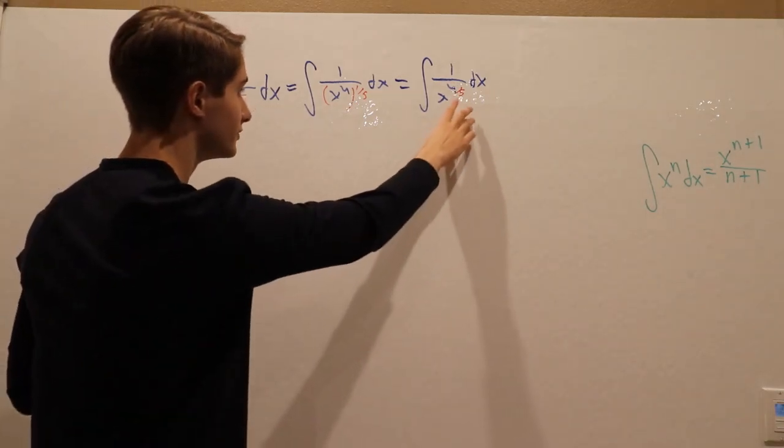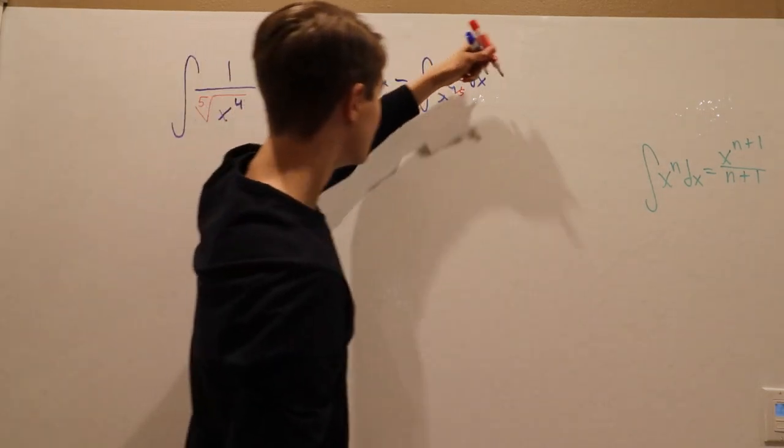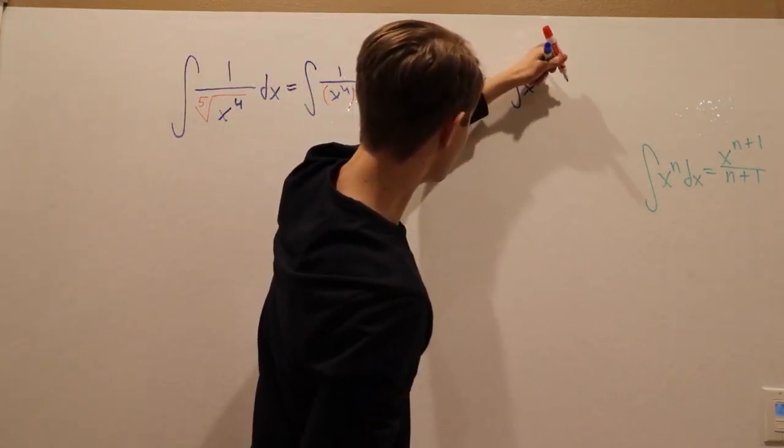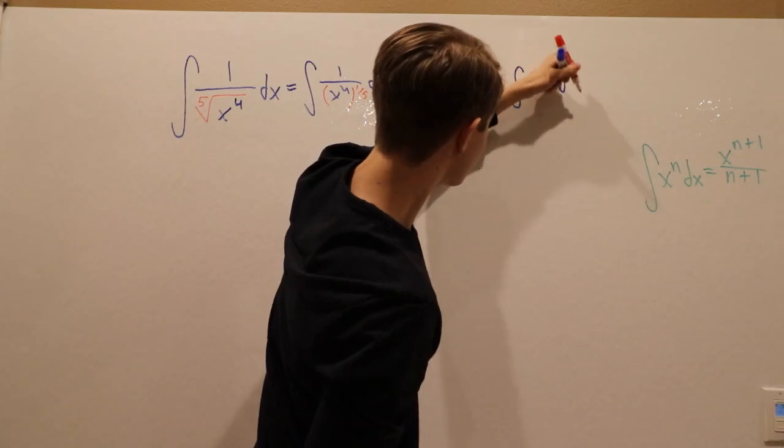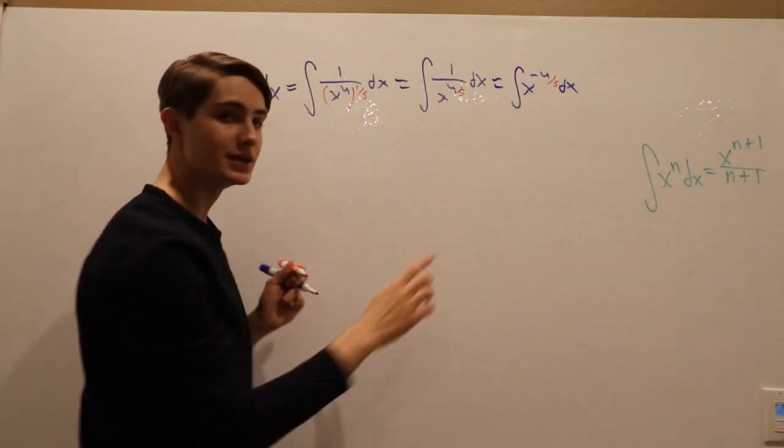And the last thing we can do here is make this power negative so that we can bring it to the top. So then we have the integral of x to the negative four-fifths. Now we're ready to integrate because we can see that